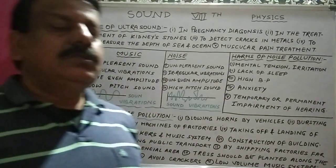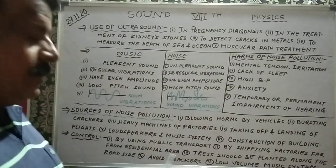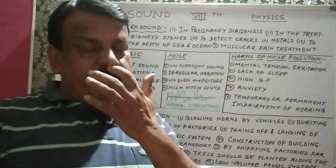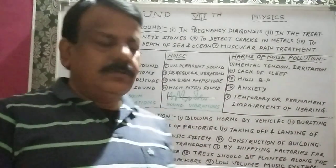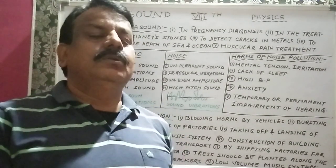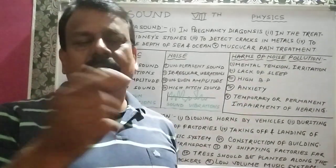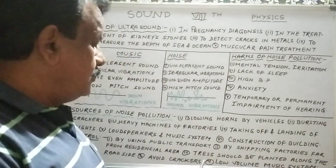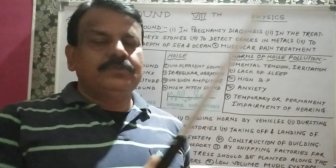How can we control noise pollution? We can minimize it by applying a few methods. First, we should use public transport — if 100 people travel by one or two buses instead of individual vehicles, noise pollution is reduced. We should shift factories and industries far away from residential areas. We should plant trees along the roadside, because green trees absorb noise pollution.